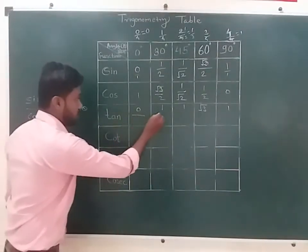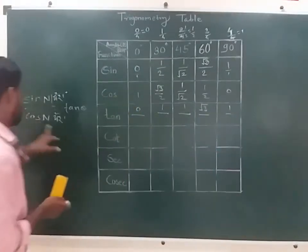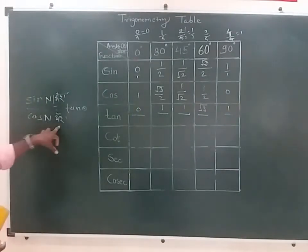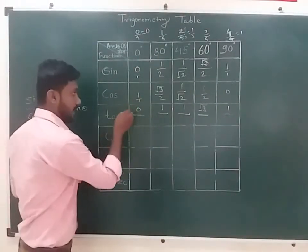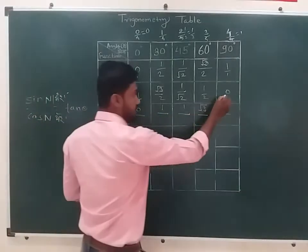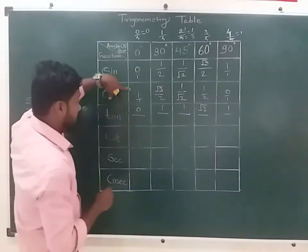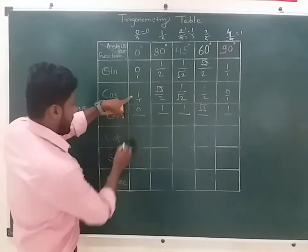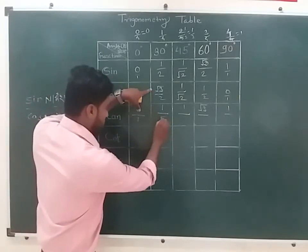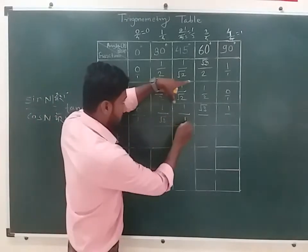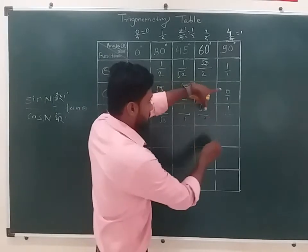Then we have to make a fraction. What do we have to do? Here is 1 and here is 1. We have to make a 1. Root 3 is here — the numerator is one. The numerator one is zero.